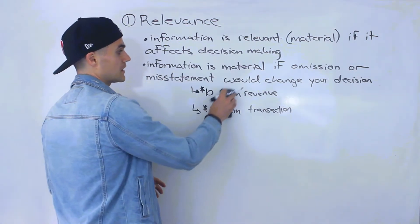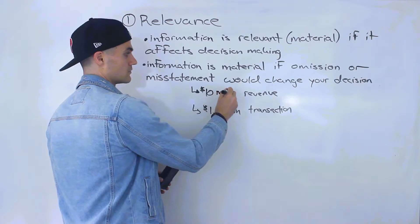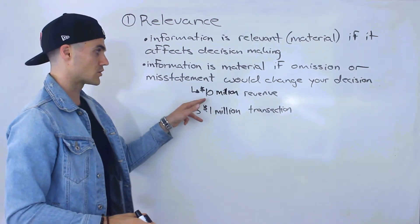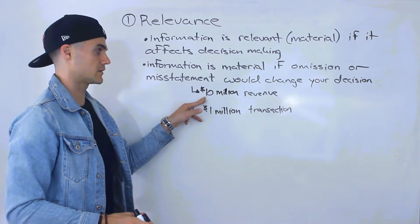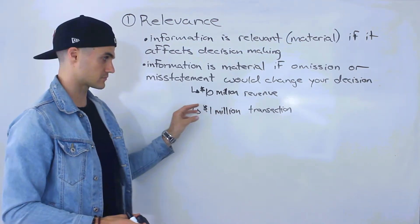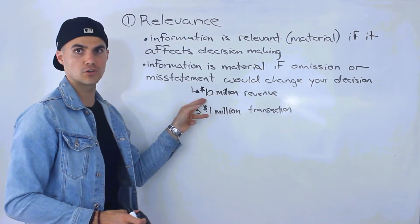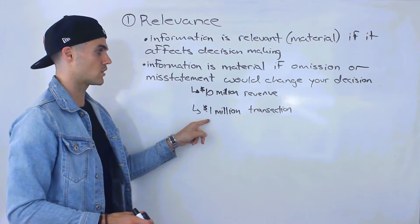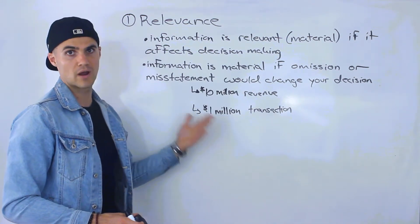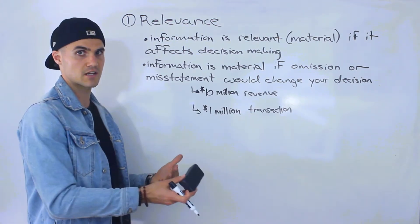But let's say instead that this company was making $10 million worth of revenue. Well, notice that $1 million is a large chunk of $10 million. That's 10%. So a transaction that is 10% of a company's revenue, that's a big deal. So misstating that or omitting that would be relevant then. It would change your decision making of whether you want to invest in this company or not.